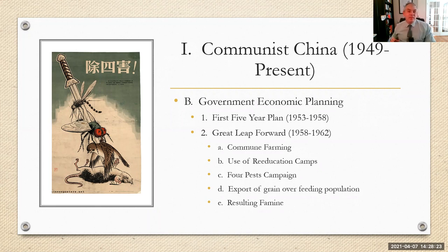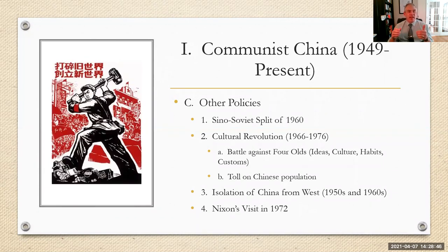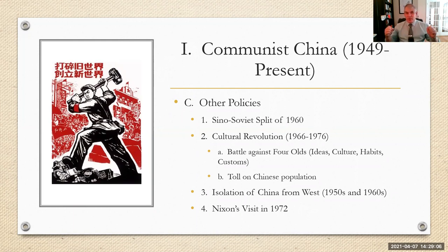In 1962, the Great Leap Forward was abandoned, though heavy-handed policies continued. One such development was the Sino-Soviet split of 1960, where China and the Soviet Union became antagonists and rivals instead of allies. This stemmed from border disputes and Mao Zedong's desire to be independent of Moscow and not have to follow Moscow's lead in everything. You would think they would be natural allies — and in the 1950s they were — but in the 1960s this break emerged and lasted for quite a while.